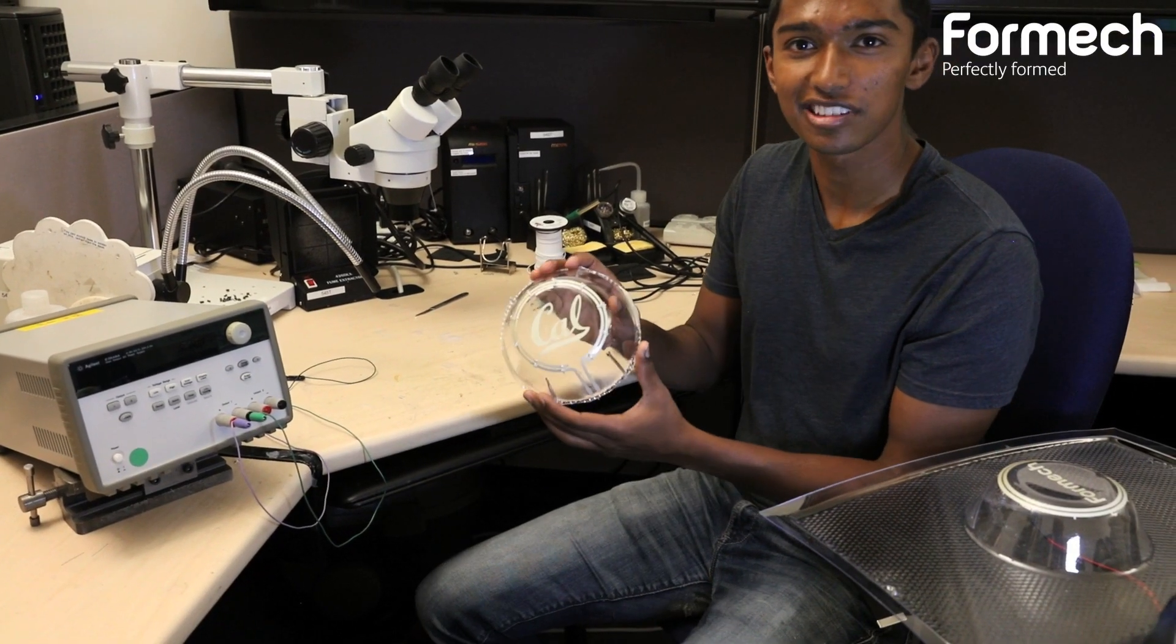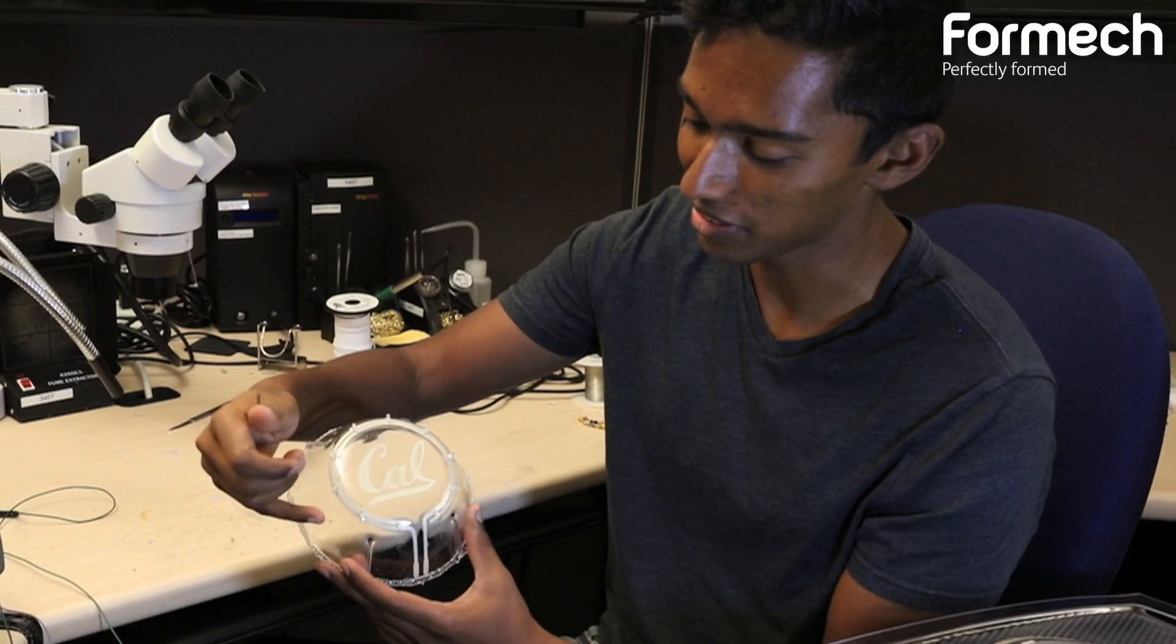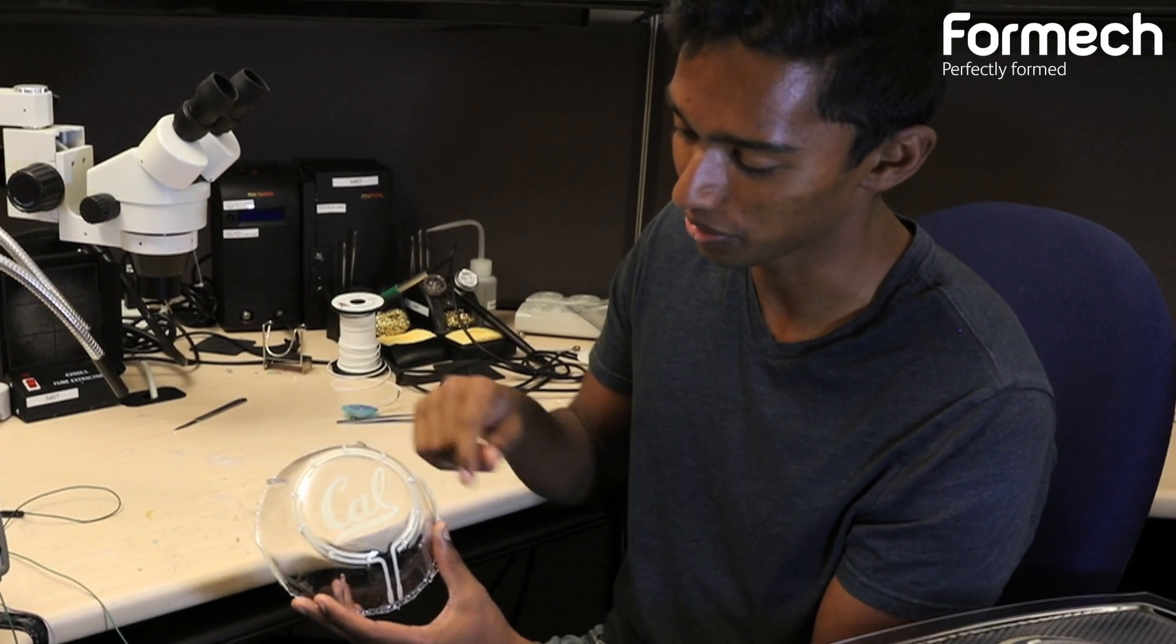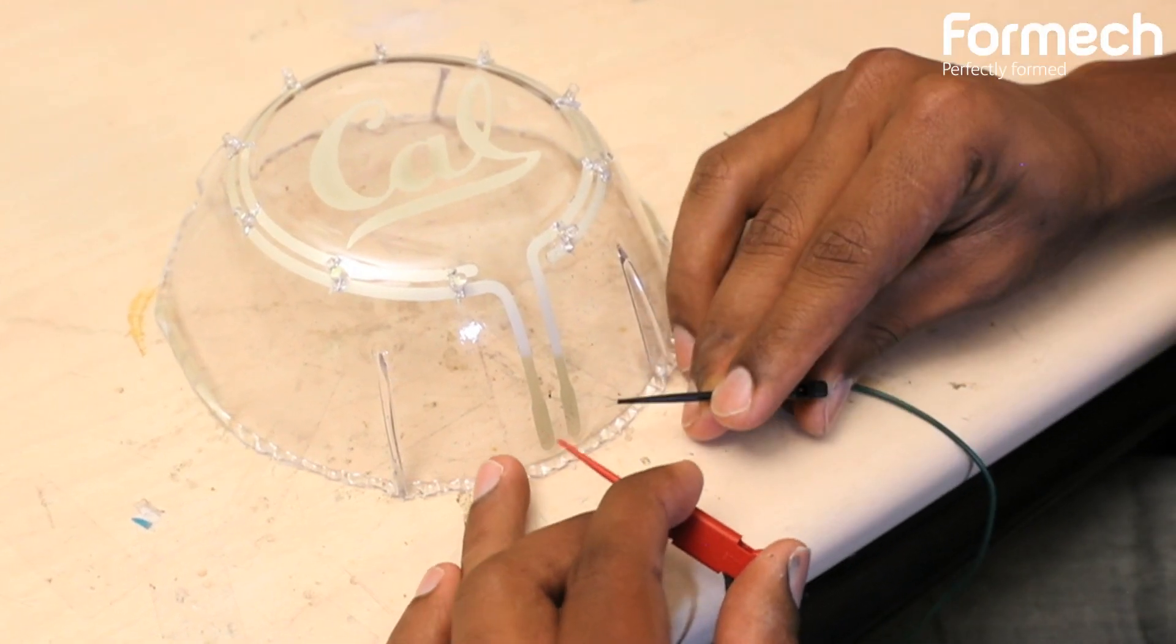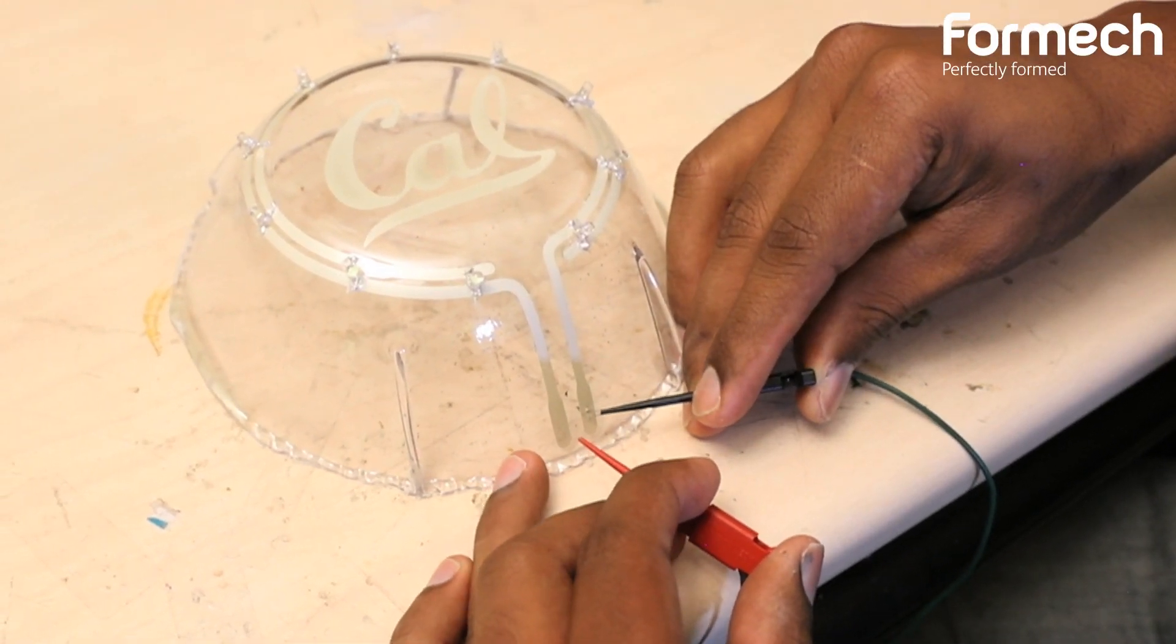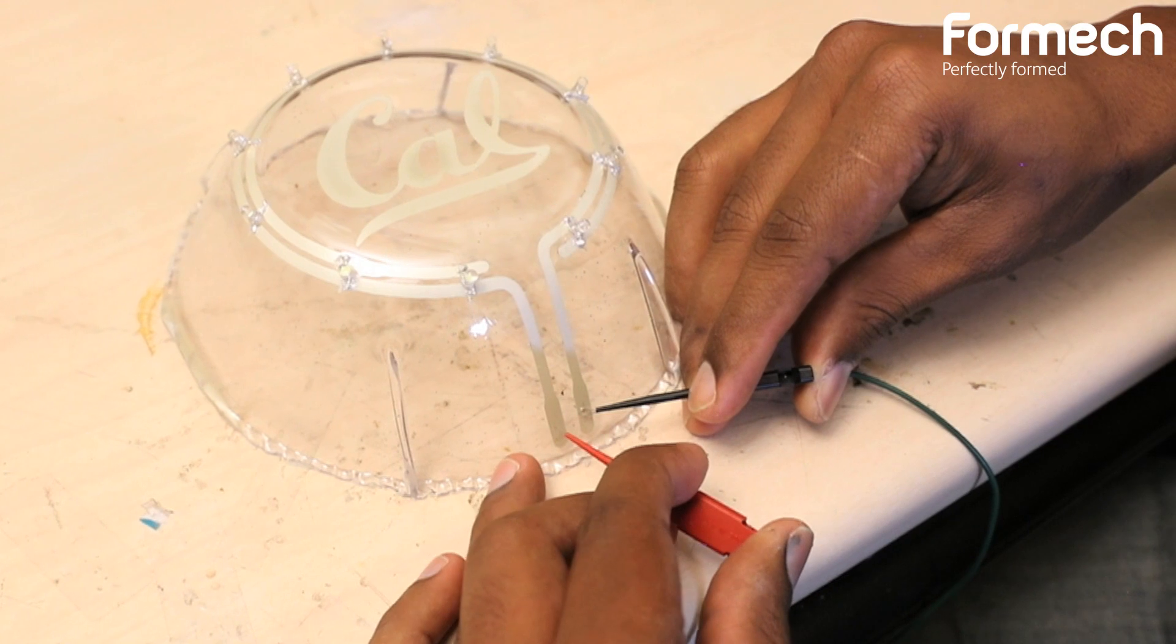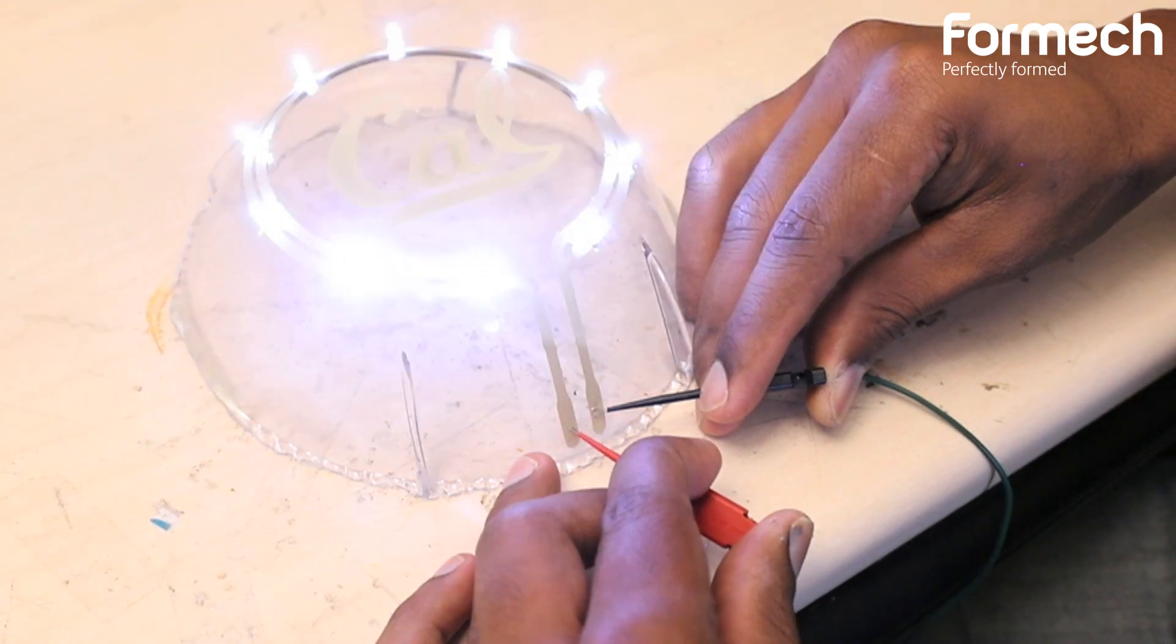A couple days ago I made this sample, and it has a series of LEDs wired around the perimeter. So now if I connect the ground of my power supply to the circuit and apply 4 volts, we've got light.